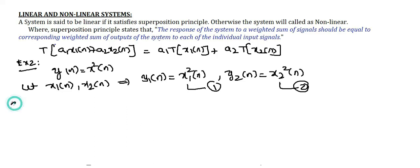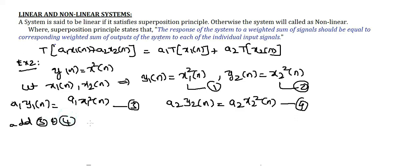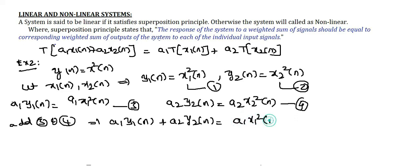Multiplying by arbitrary constants a1 and a2: a1·y1(n) = a1·x1²(n) — equation 3 — and a2·y2(n) = a2·x2²(n) — equation 4. Adding equations 3 and 4 gives: a1·y1(n) + a2·y2(n) = a1·x1²(n) + a2·x2²(n). Let this be equation 5.